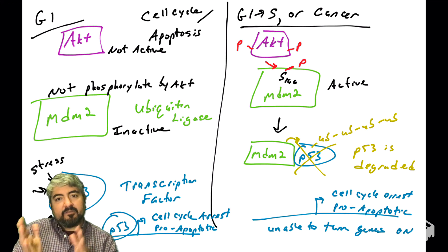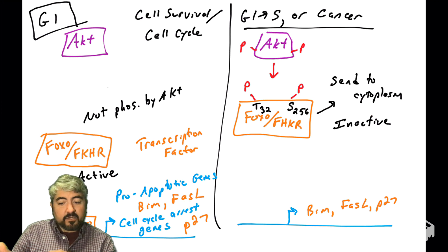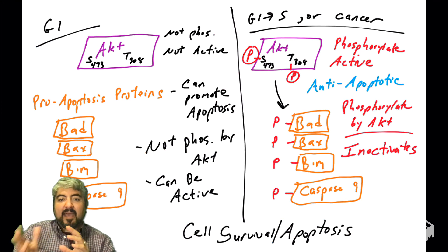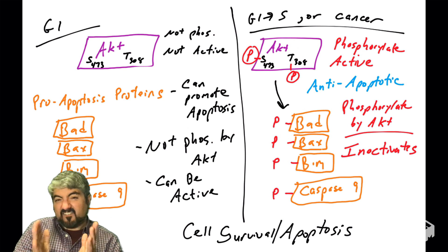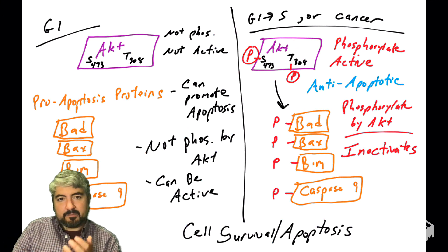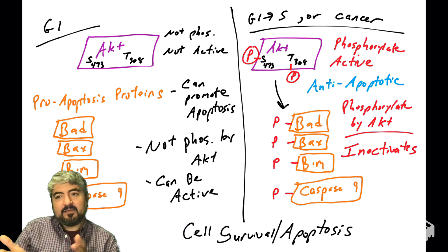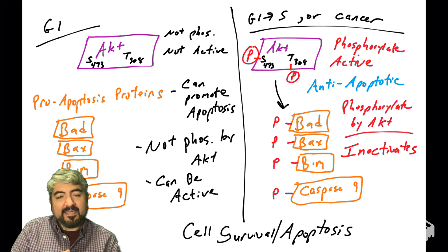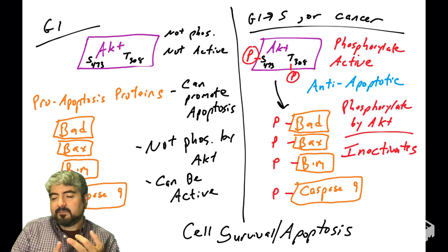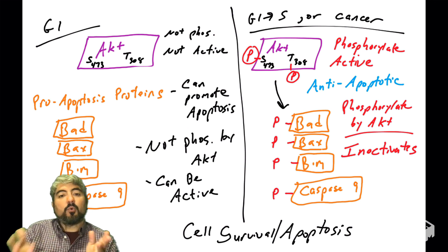So I've given you a brief overview of some of the AKT substrates — MDM2, FOXO, BAD, BAX, BIM, and caspase-9. For all those substrates, you should know what those proteins do, what their function is, and what AKT does to these proteins when it phosphorylates them: does AKT activate or inactivate them, and what is the result? There'll be another video covering more AKT substrates such as GSK3-beta and how AKT regulates protein synthesis through mTOR.